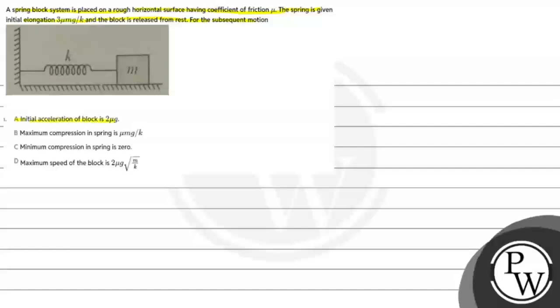The subsequent motion - option A: initial acceleration of the block is 2 mu g, option B: maximum compression in spring is 3 mu g by k, option C: minimum compression in spring is 0, option D: maximum speed of the block is 2 mu g times root m by k.